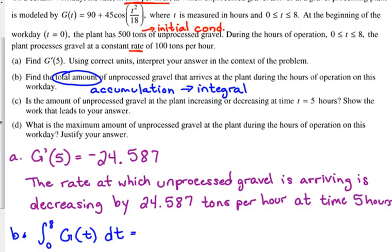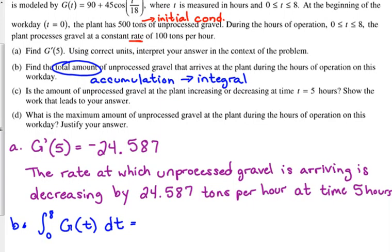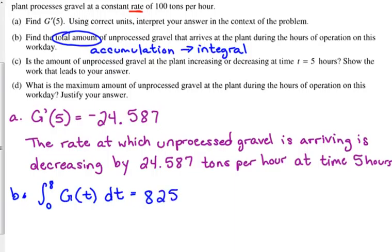Put your equal sign and use your calculator — do not do this by hand. Go to your calculus menu, select integral, plug in your function, comma x, comma zero, comma eight. It takes just a minute because it's a trig function. The answer is 825.551 tons. Make sure you put the units on there. This one doesn't specifically say to include units, but it never ever hurts. And that's literally all you have to put for part B on this calculator active section.